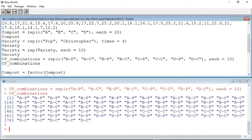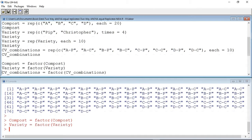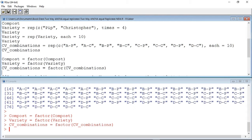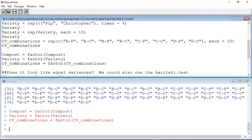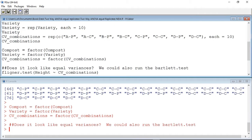When doing an ANOVA in R, R requires that the categorical variables are declared as factors. So, the next three lines are going to turn our variables into factors. We now have compost as a factor, variety as a factor, and CV combinations as a factor. We can now move on to see if the variances are homogeneous or not. In this case, I'm going to run a Fligner test. The focus of the Fligner test is height as divided up according to the compost and variety used.